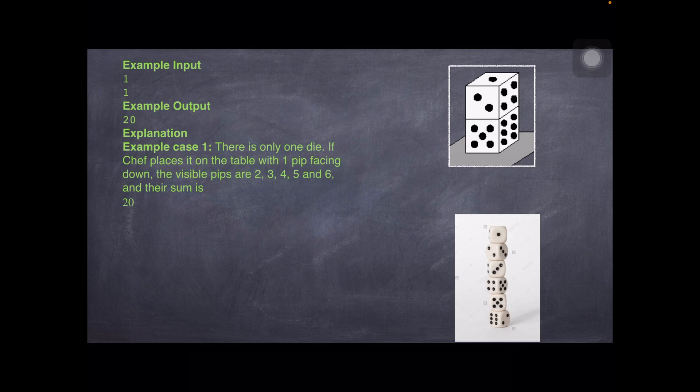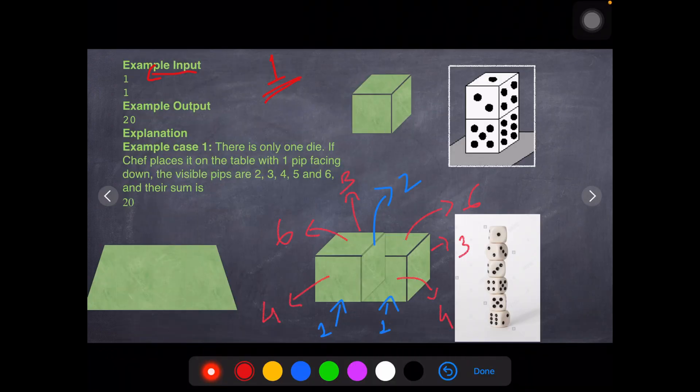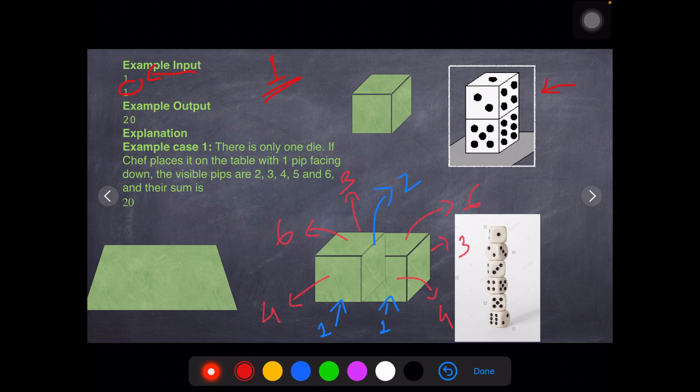Let us now look at the example input and output test cases for solving this problem. Here, given you have one test case and one die. In one die, if you place it in any way, it will be the minimum surface area.